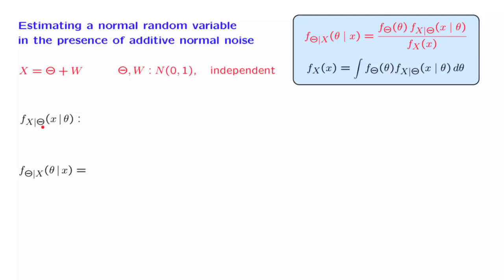If I tell you that the random variable capital theta takes on a specific value little theta, then in that conditional universe, our observation is going to be that specific value little theta plus the noise term capital W. Since w is independent of theta, even after being told the value of theta, the distribution of w does not change — it is still a standard normal. So x is a normal random variable with mean equal to theta and variance equal to 1.